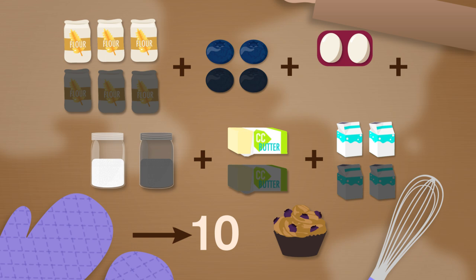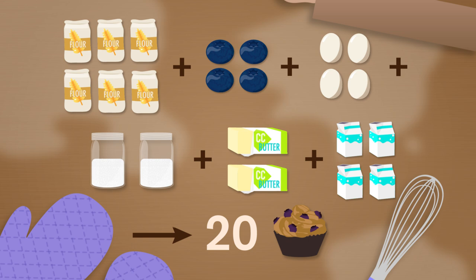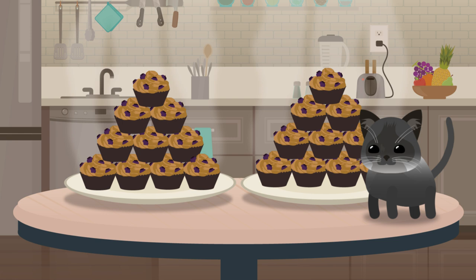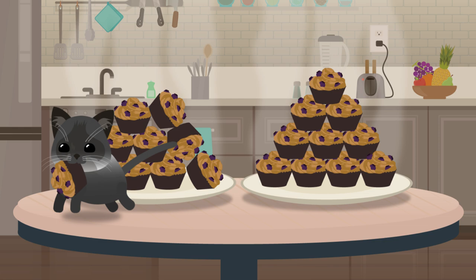So let's pretend that we can grab two replacement eggs from the fridge, and now we have enough for a real double batch of muffins again. We sneak the batter into the oven before Stella can interfere. But as the baked muffins are cooling, Stella gets revenge by snatching one for herself. We couldn't have predicted that she'd misbehave, but it still changed our final product.